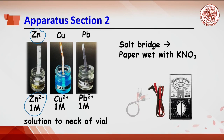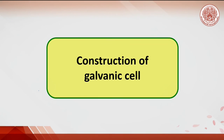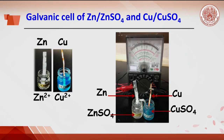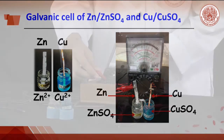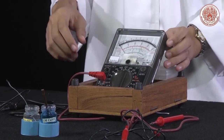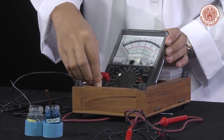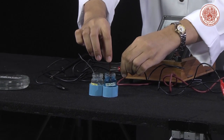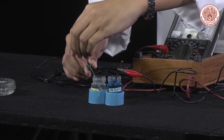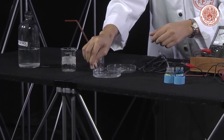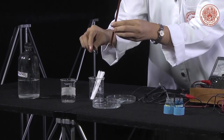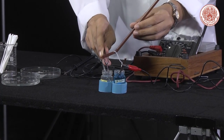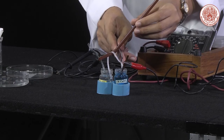The red terminal of the multimeter goes to the positive jack and black goes to the negative jack. Connect the ends of the leads with alligator clips connected to the electrodes. Prepare a salt bridge by soaking a paper strip in 1 molar potassium nitrate solution. Place the salt bridge across the two half cells. Make sure both ends of the paper strip are immersed in the solution.